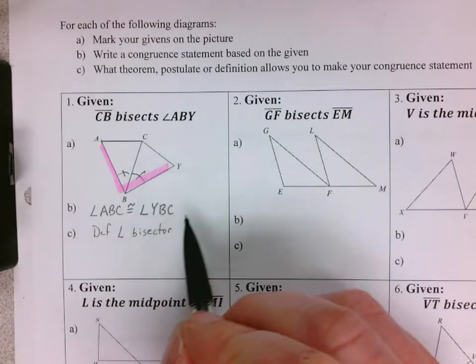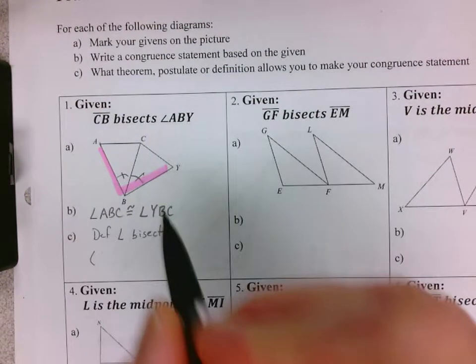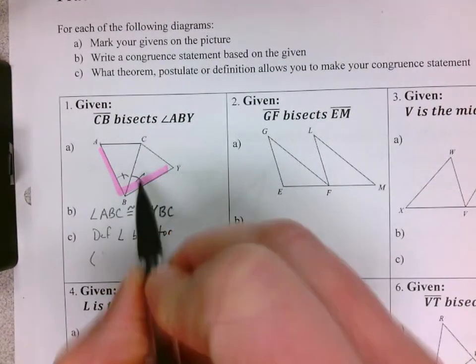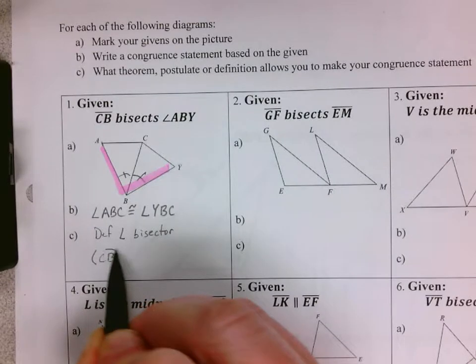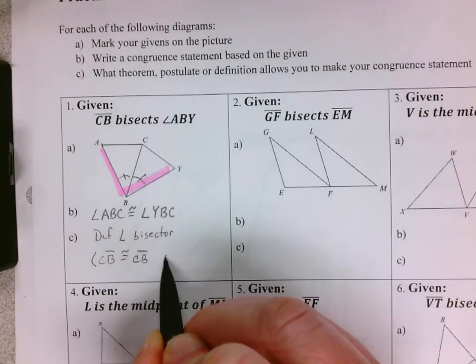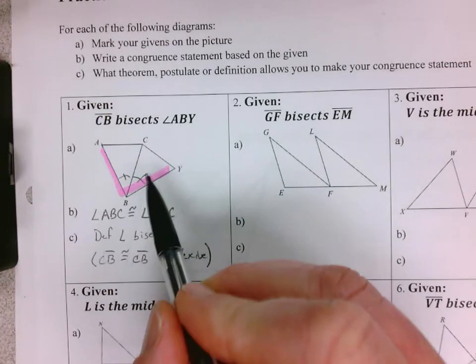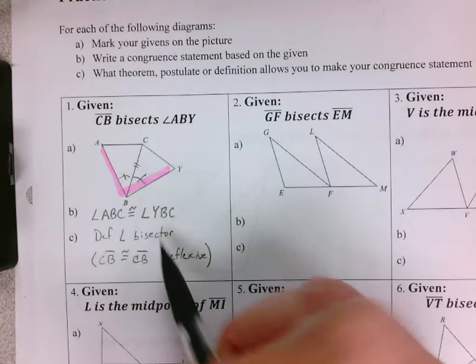An angle bisector cuts something in half. Just as a side note on this picture, if you were thinking about triangle congruence, you could also say CB is congruent to CB by reflexive property. That would be an additional statement, so like if you're doing a proof here, you'd already have a side and an angle.